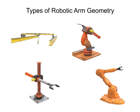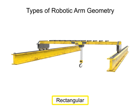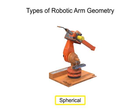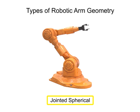There are four main types of robotic arm geometry: rectangular, cylindrical, spherical, and jointed spherical.